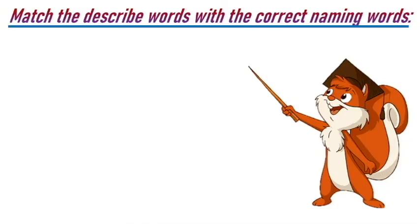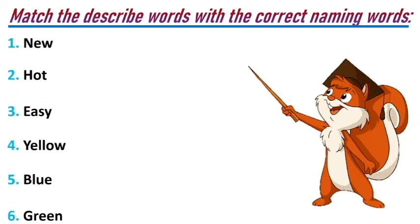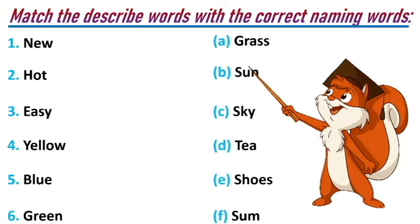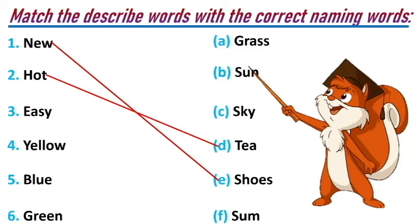Now let's move on to the third activity: match the describing words with the correct naming words. On one side we have new, hot, easy, yellow, blue, green. On the other side we have grass, sun, sky, pea, shoes, sun. First one — new goes to shoes. Second one — hot goes to sun.